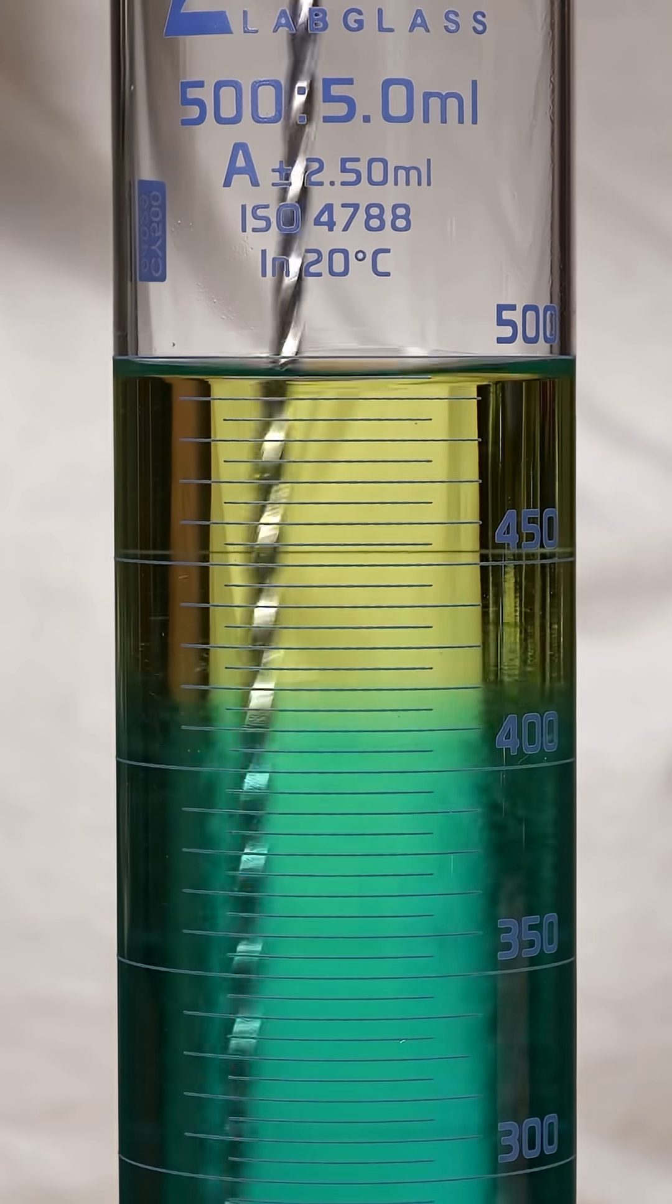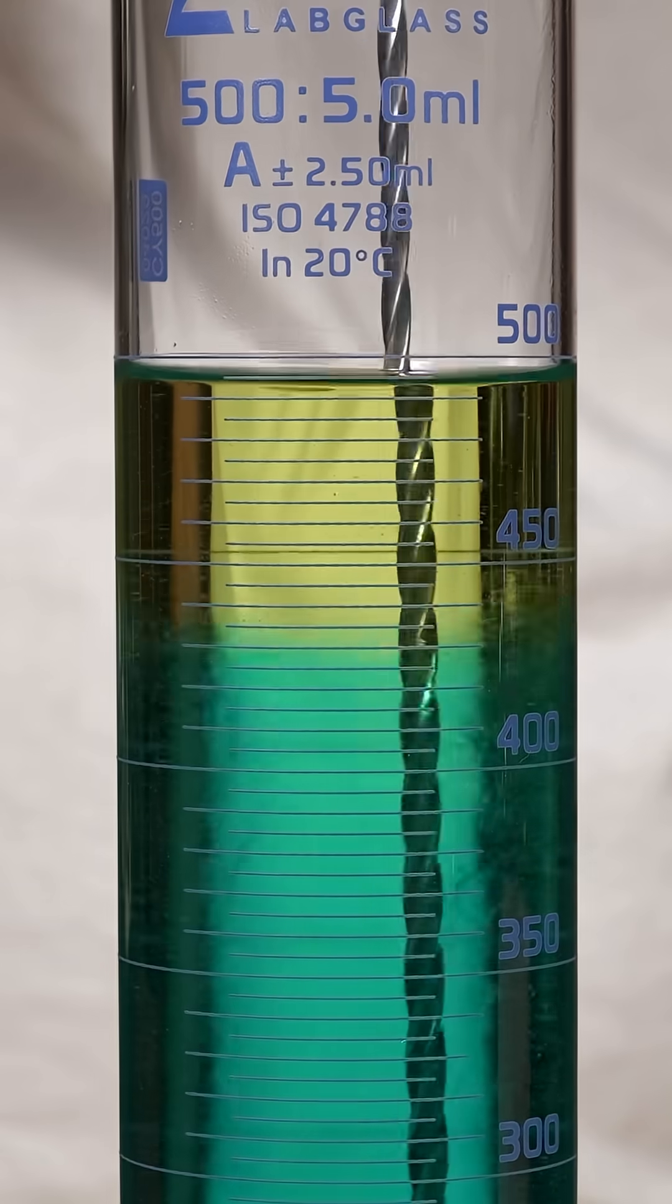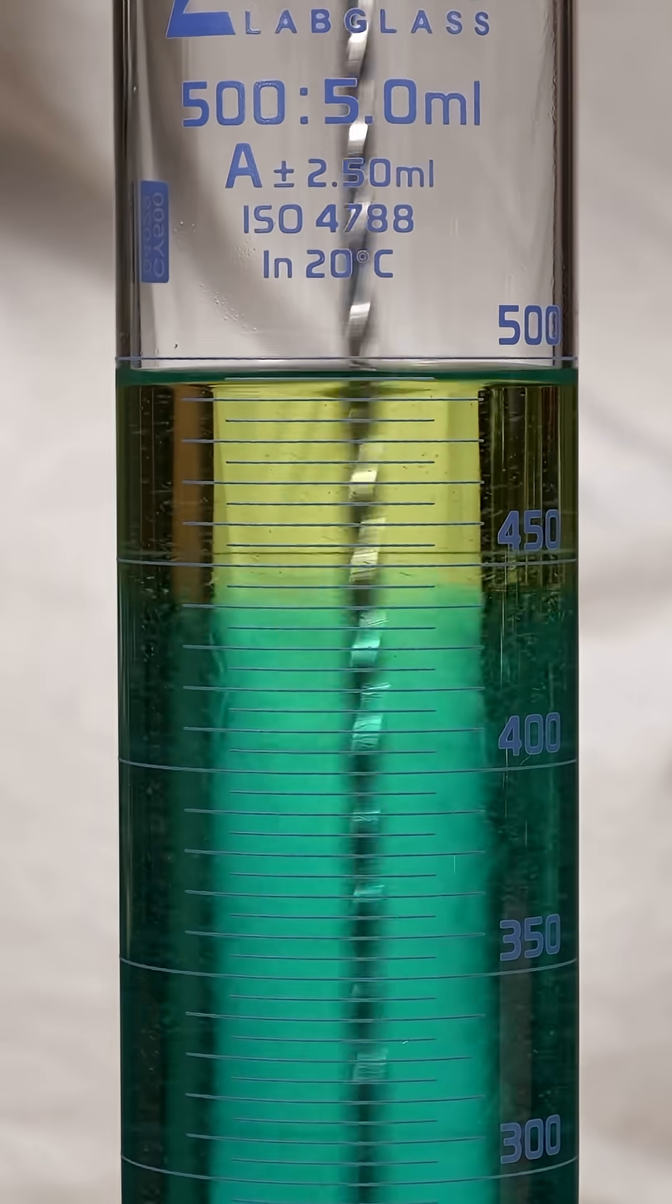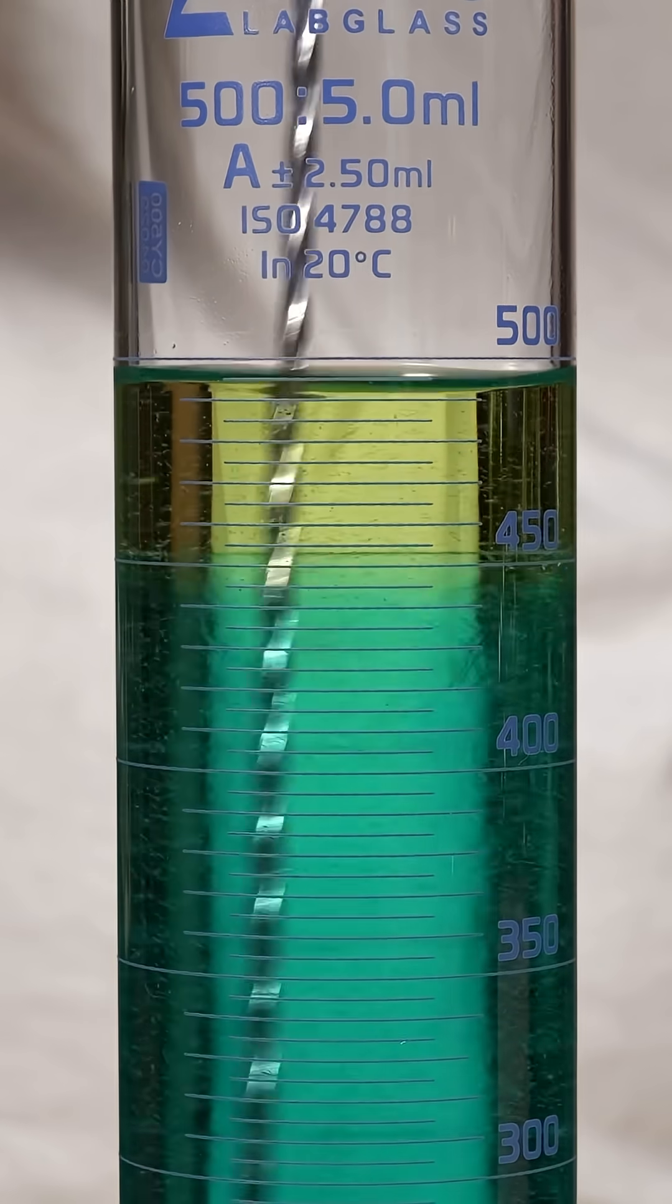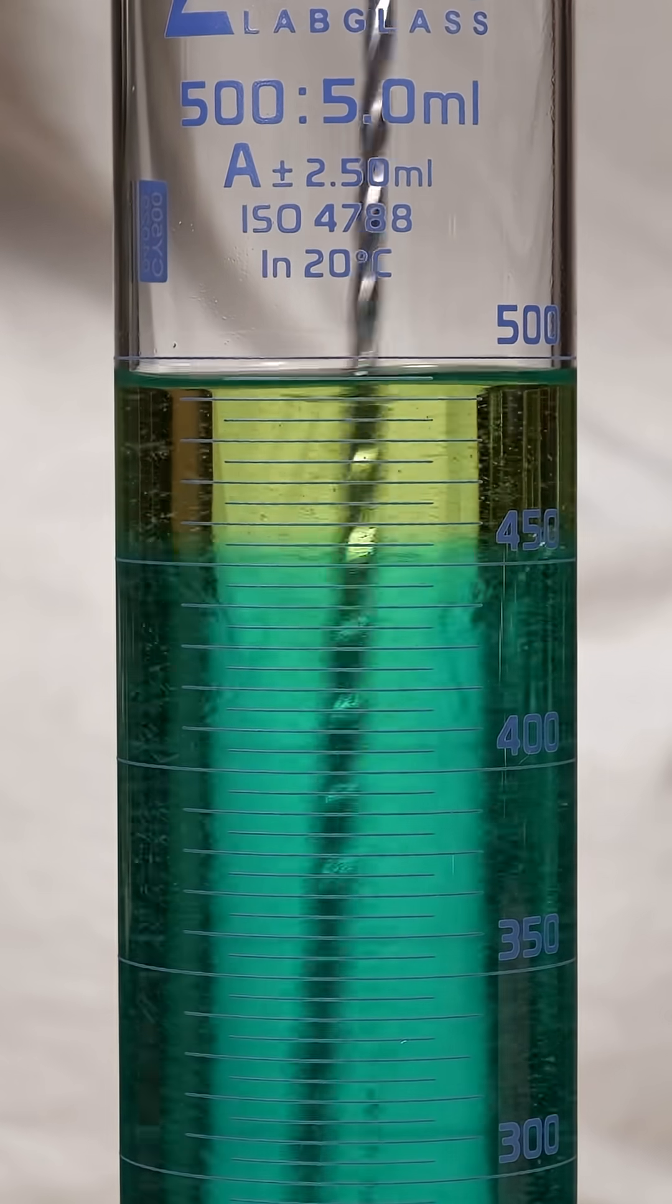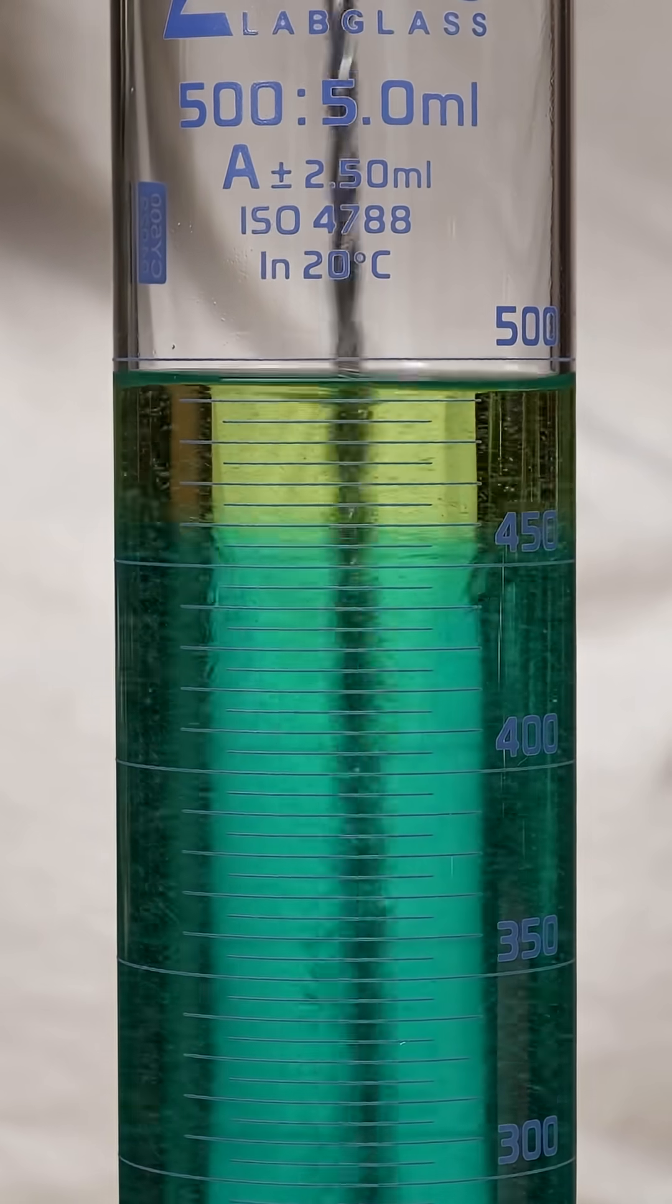Look at that 500 milliliter line. Keep looking at it. The volume of the liquid is going down. All I'm doing here is mixing the Everclear and the water, and the volume is going down. Visibly.